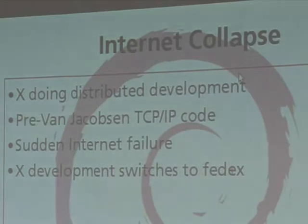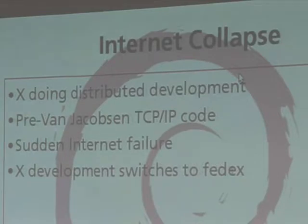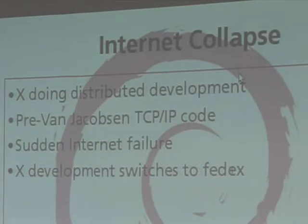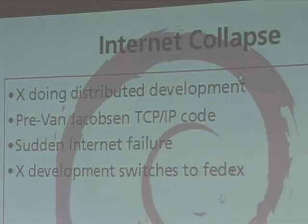This was pre-Van Jacobsen slow start TCP implementation. In this era, any packet loss — if you lost a packet in the middle of a packet stream — the sender would retransmit every packet that had not been acknowledged yet. If you lose one packet in the middle of your window, you'd retransmit the entire window. That meant as soon as the network started to get a little congested and you started to lose packets, you started to flood the network with packets. It's a positive feedback loop, so as soon as the network started to slow down, it would stop dead — effectively no usable Internet.